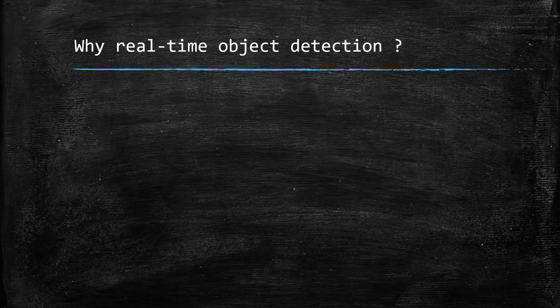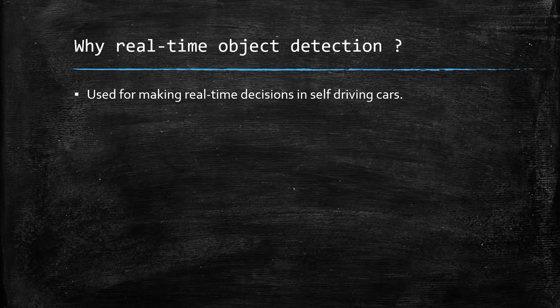Let's look at some use cases of real-time object detection. First, it's used for making real-time decisions in self-driving cars — to make better decisions than humans. For even a simple decision, these cars need vision: they need to localize and detect objects. Those decisions have to be real time because it's sometimes a matter of life and death. So to make real-life decisions, they use real-time object detection.